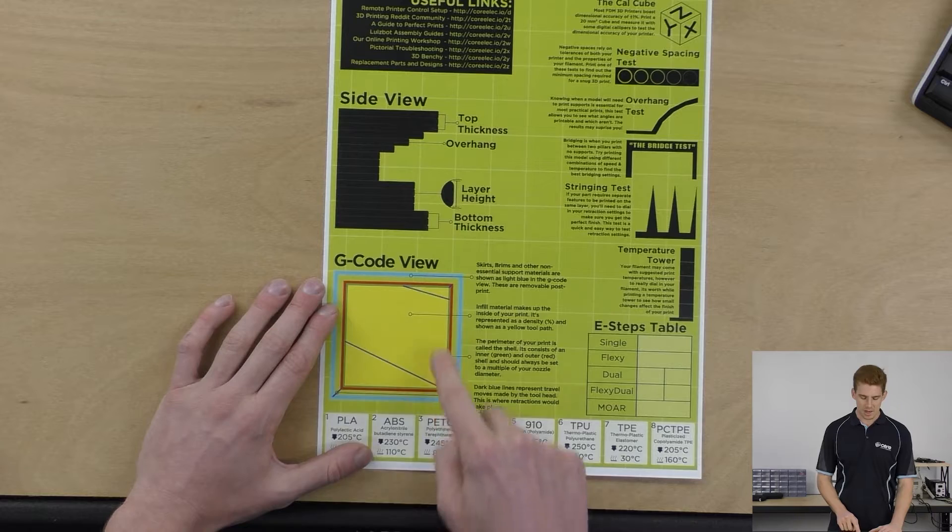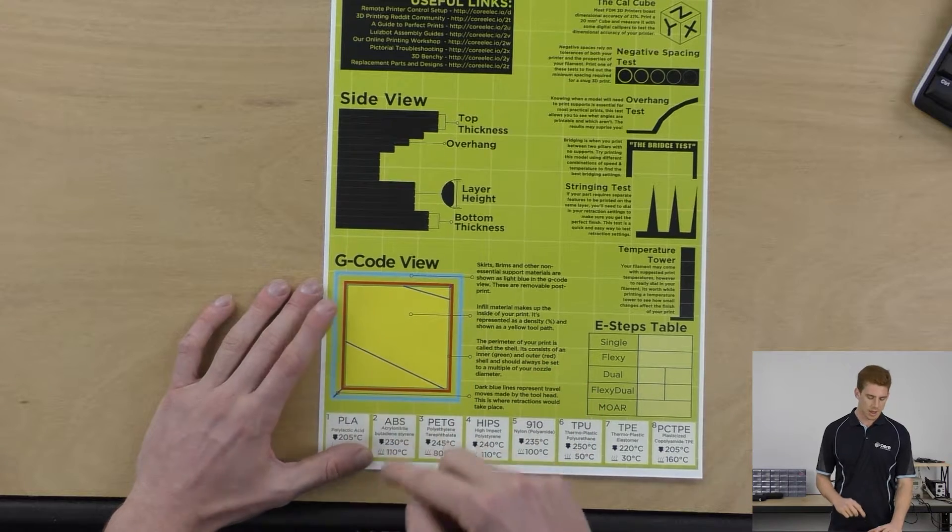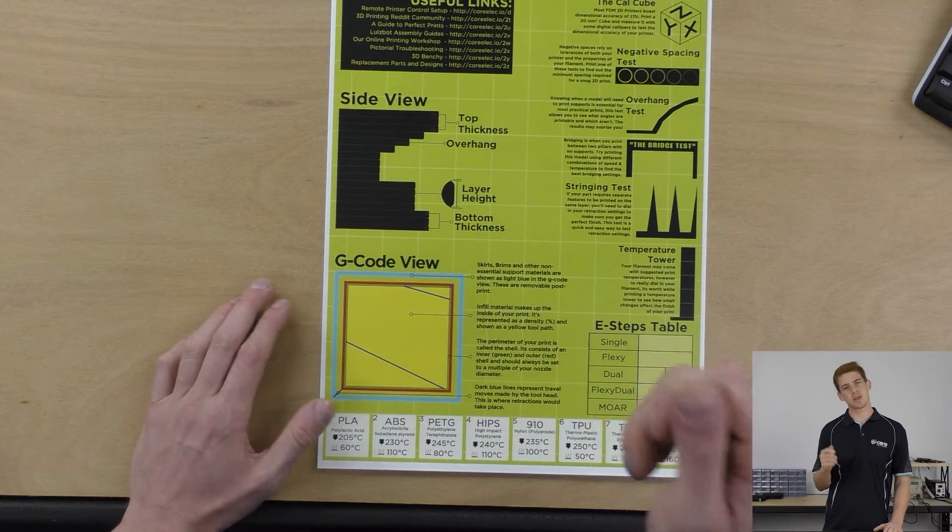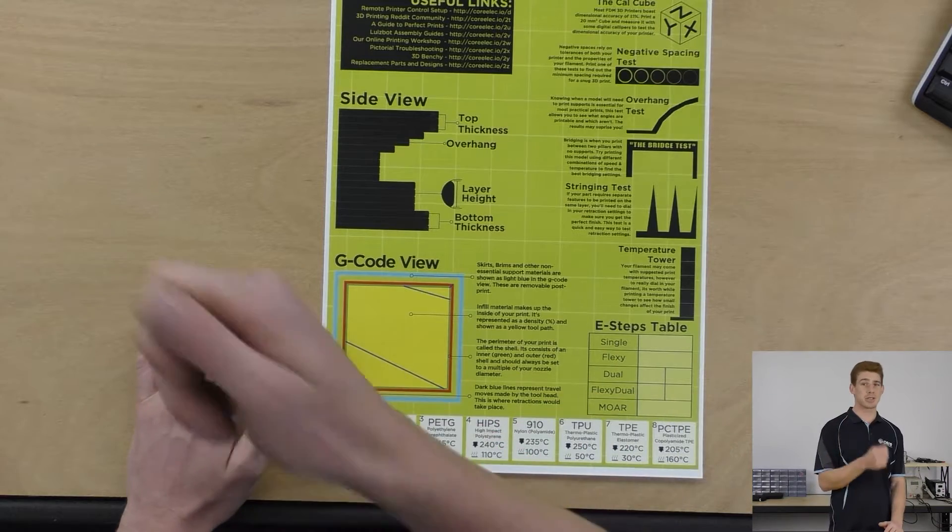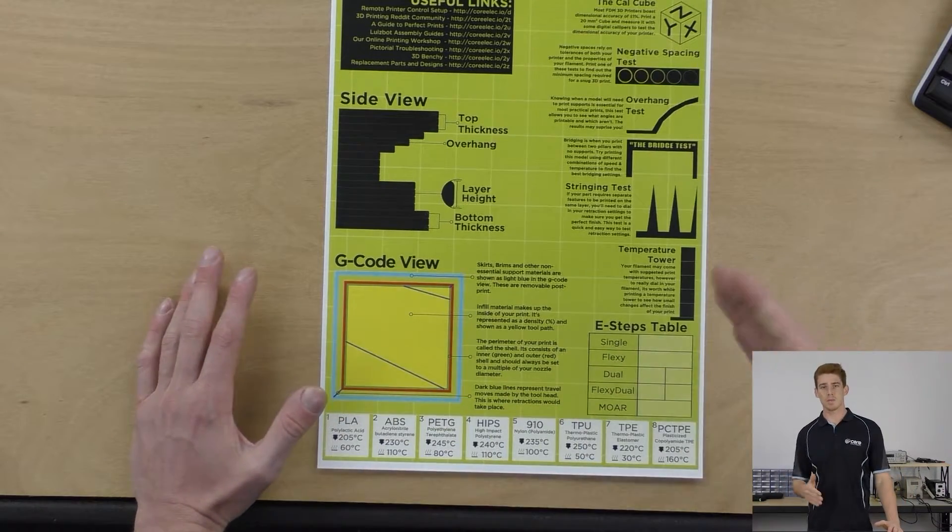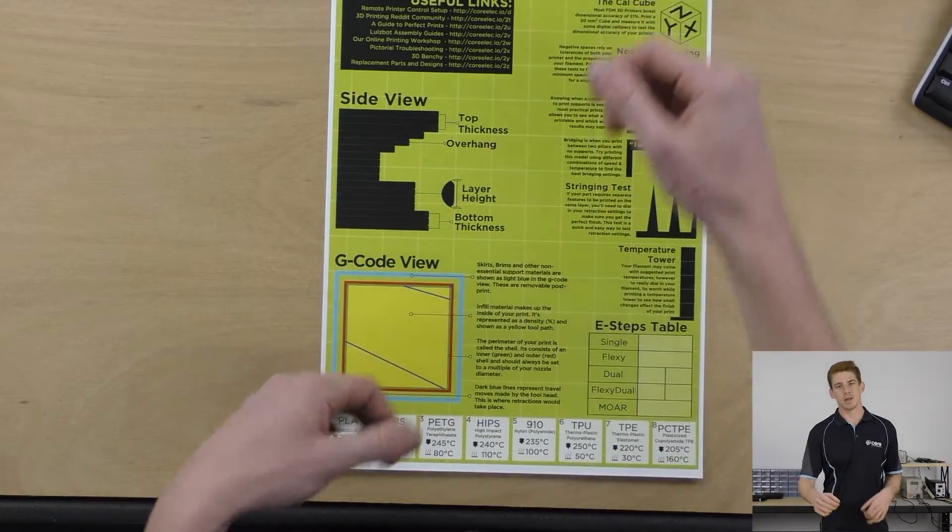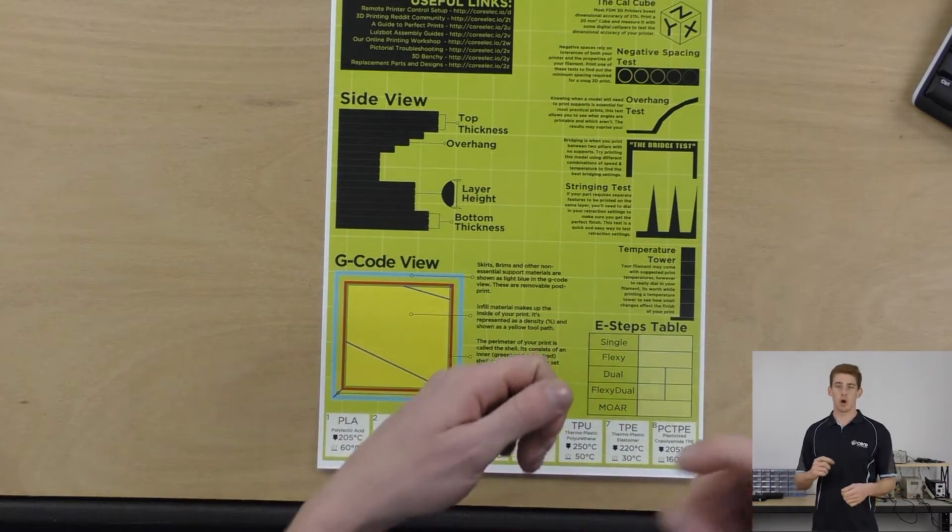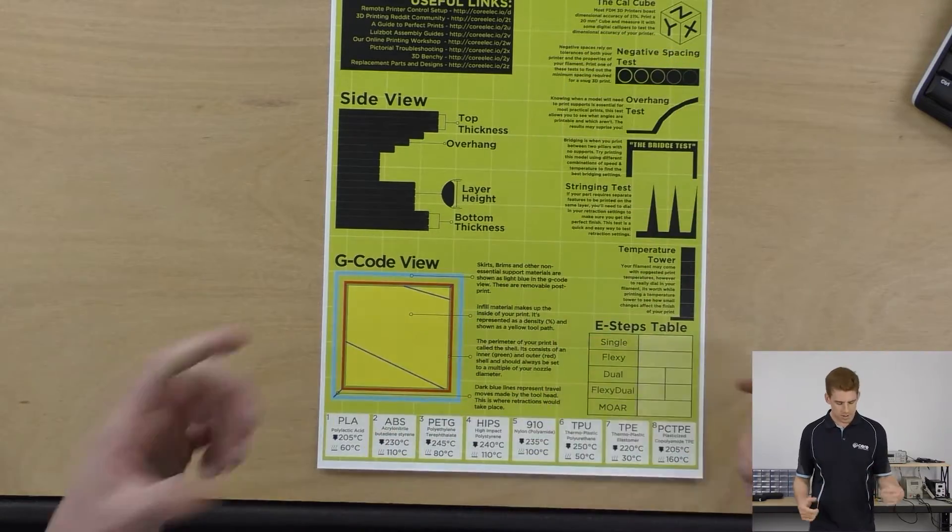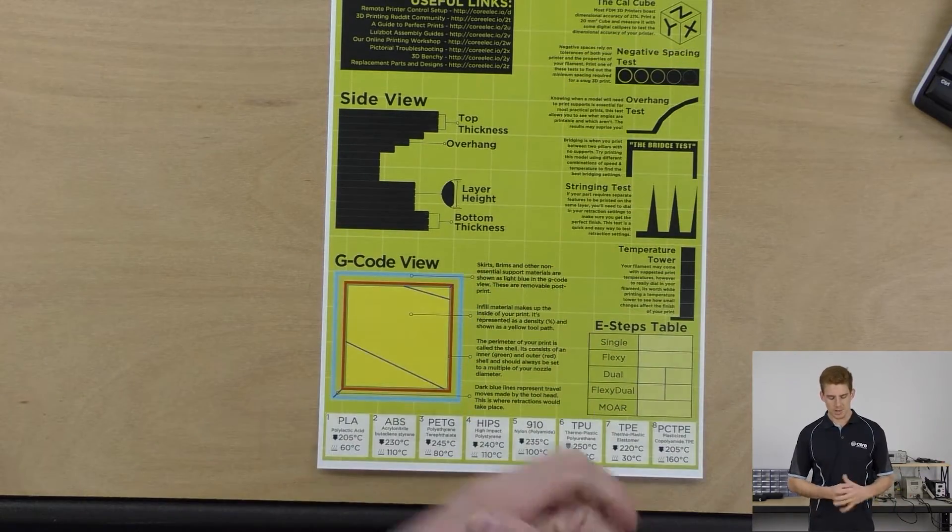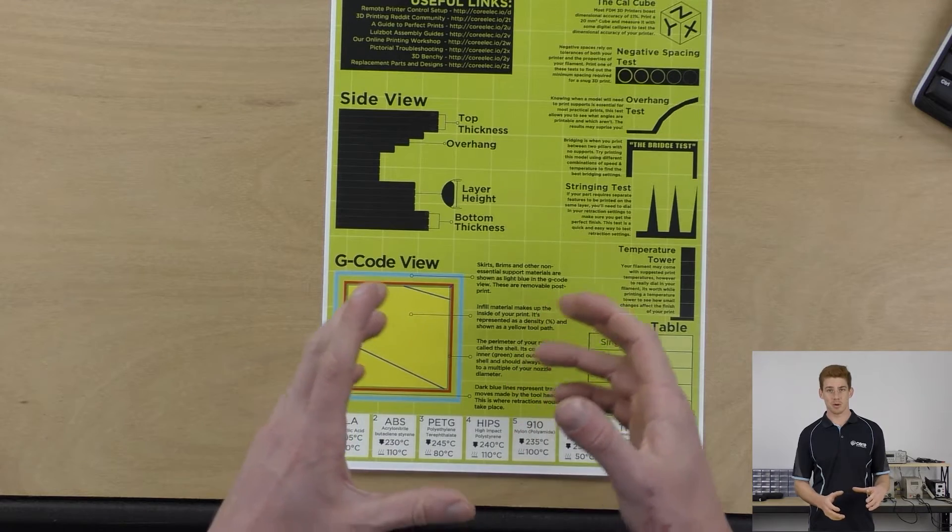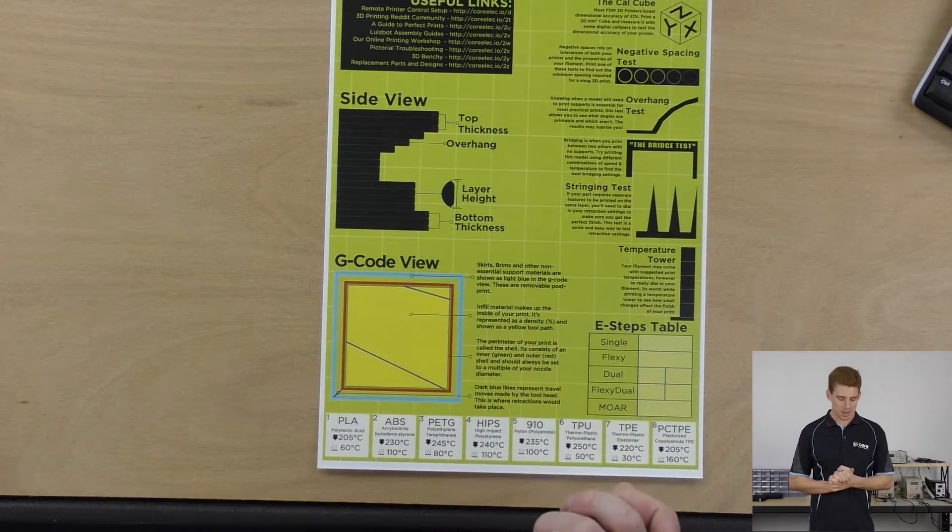Finally, we've got some dark blue lines just across the print here and they actually refer to travel movements. That's when your printer's tool head isn't actually printing anything, it's just moving from one part on the same layer to another part to print again. Usually with travel moves if they're over a certain amount, you'll need to retract your filament and go again. Now you might be able to look at a G-code view of a model and know what you're looking at a bit better.